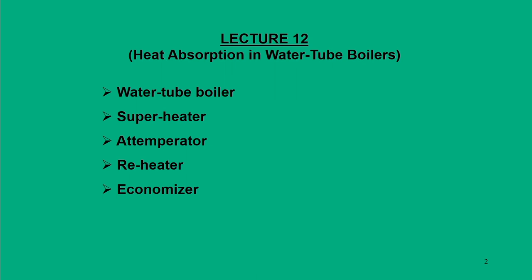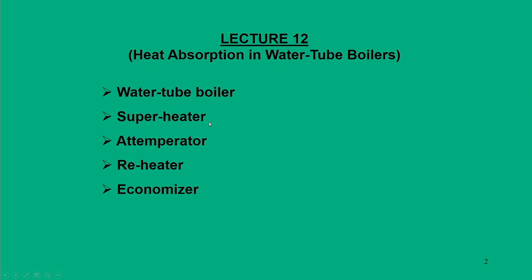In our last lecture we exhaustively talked about different components of the water tube boiler. Now in this lecture we are going to summarize different components such as superheater, attemperator, reheater, and economizer. These four components are nothing but heat exchanger units and they are interpreted in different forms, which we will see in the subsequent part.